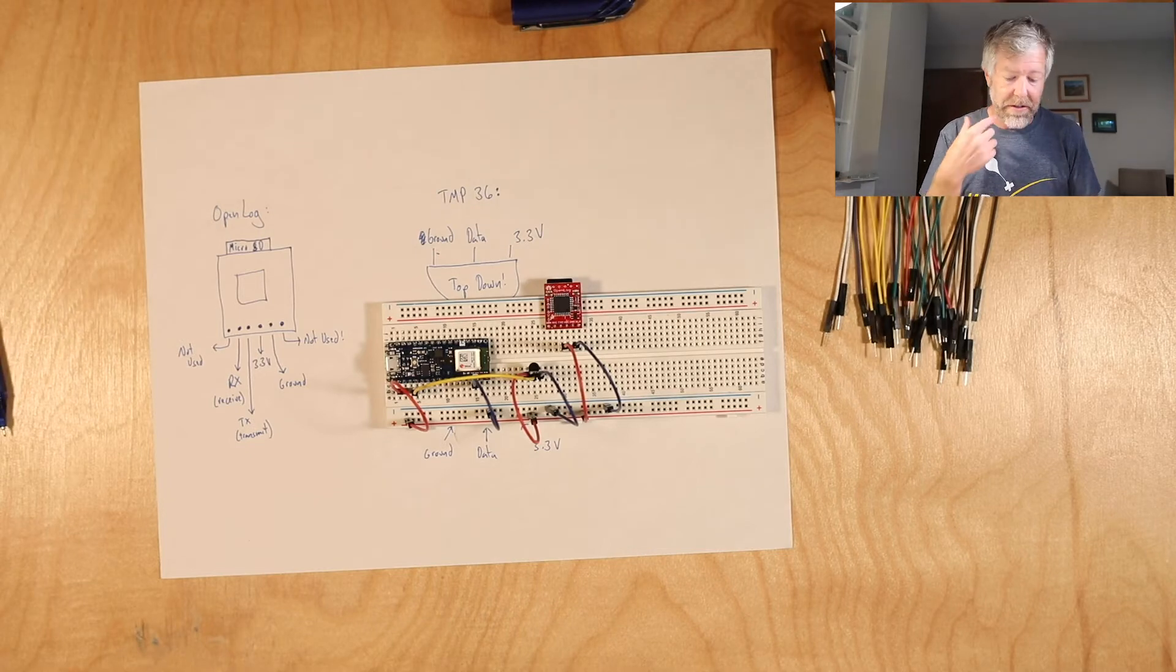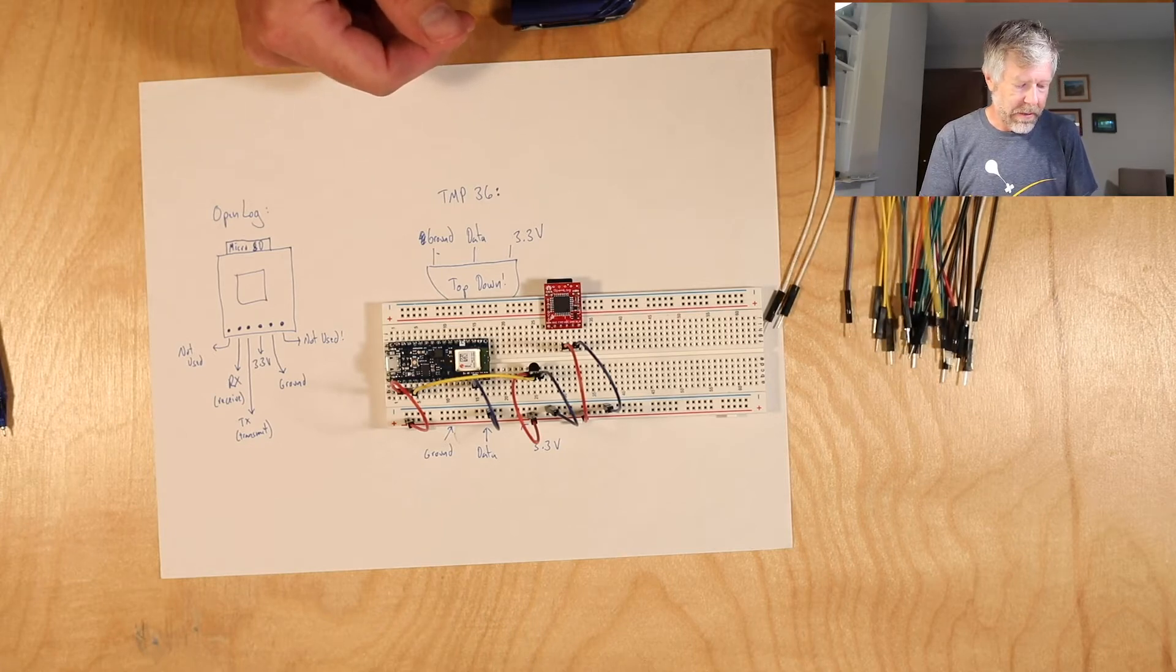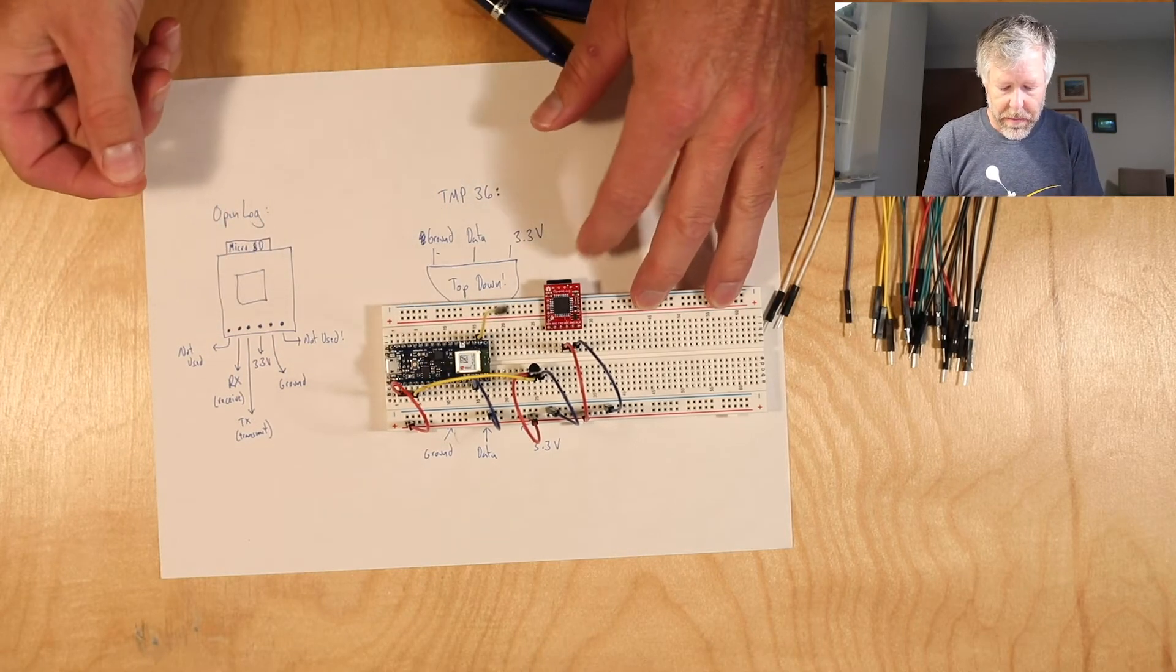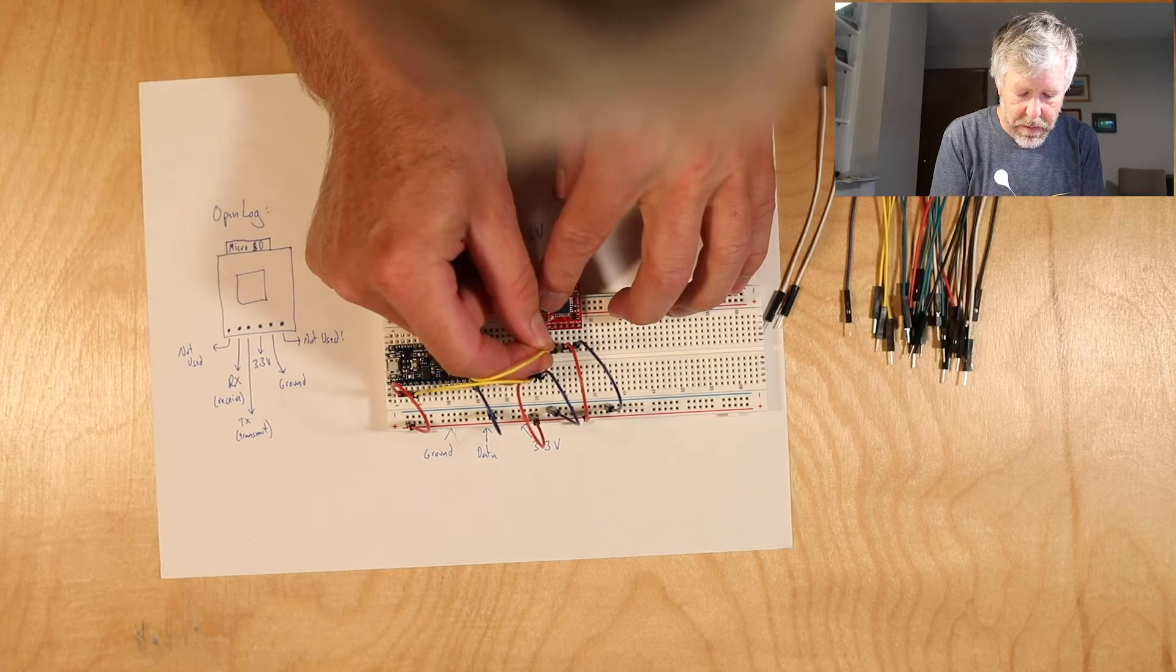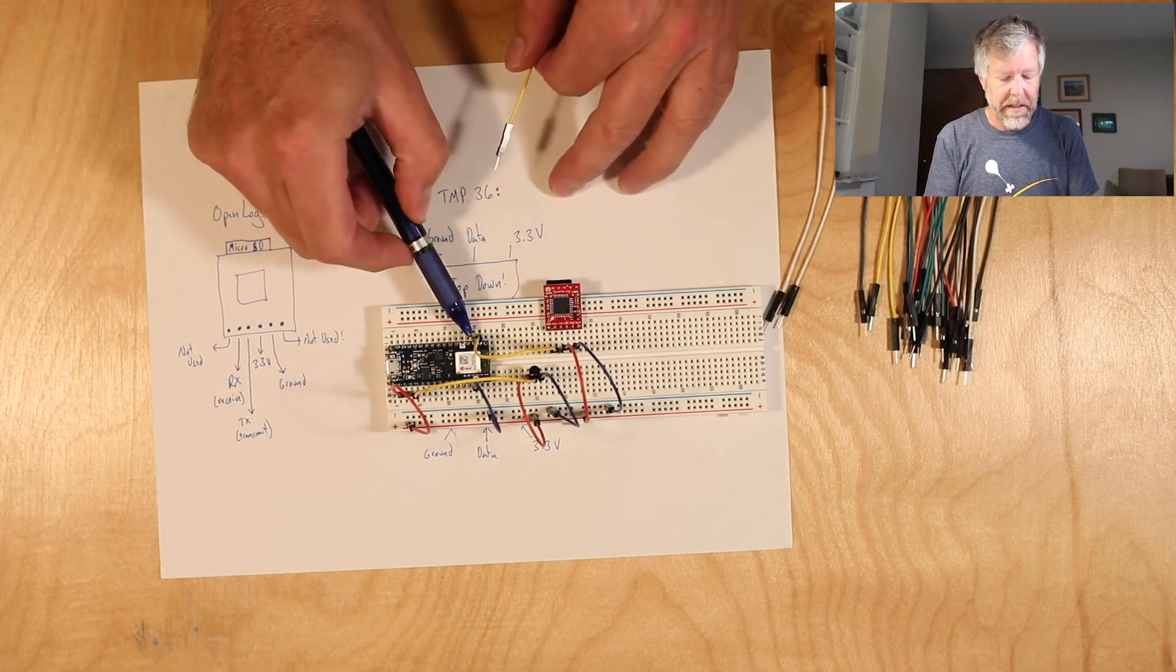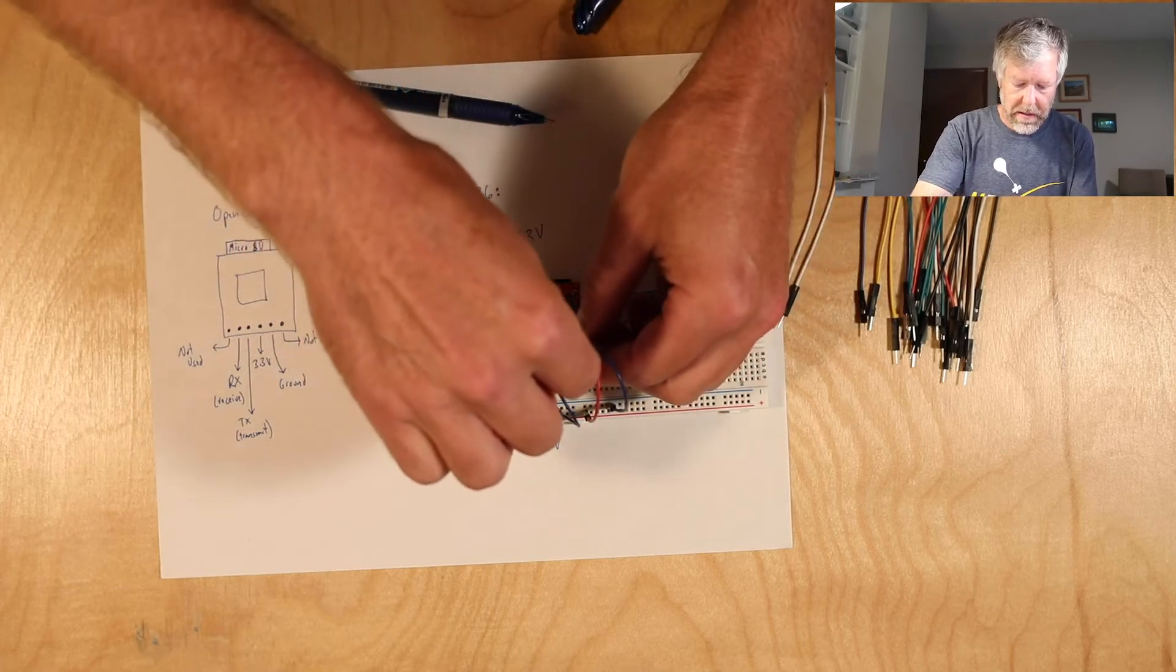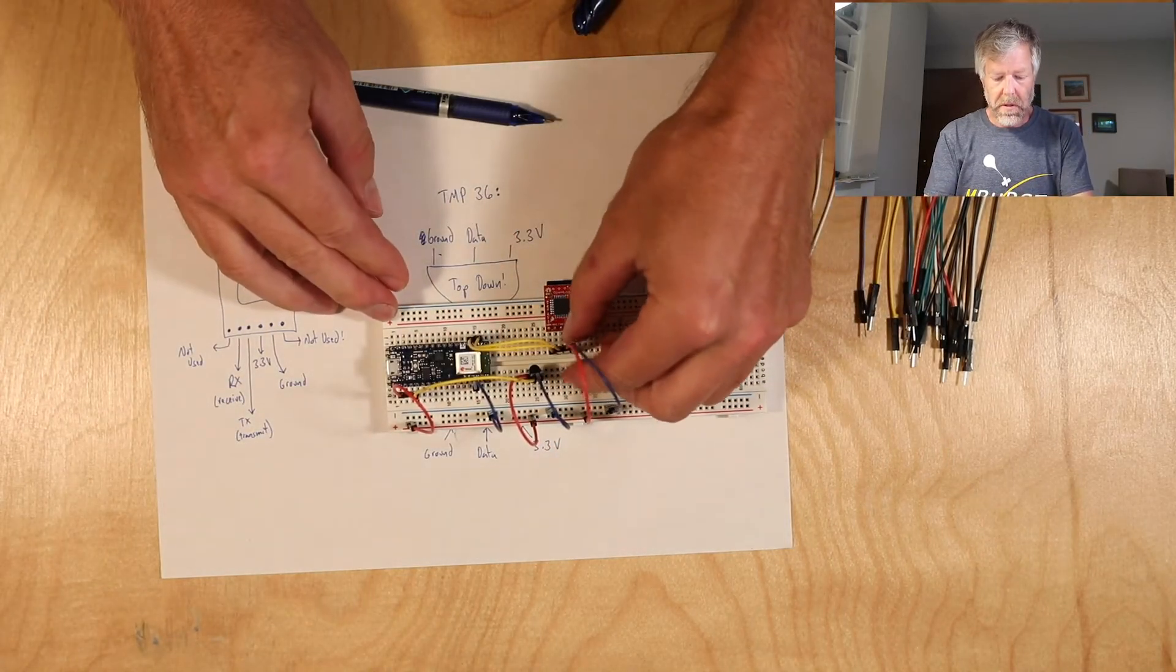Now transmit on the Arduino is receive on the OpenLog. It's transmitting from the Arduino, it's receiving it on the OpenLog. So let's take, these are digital pins. We can represent those with whatever color we want. Let's use yellow again. So what do we say? The last one is transmit. So this one we're going to plug into transmit, and then we need this one to go into receive on the OpenLog. Receive.